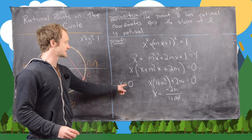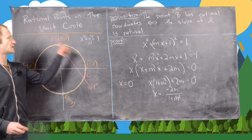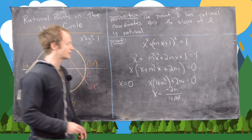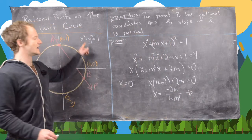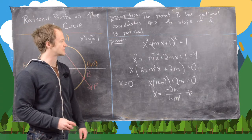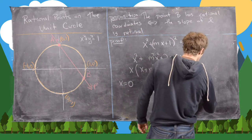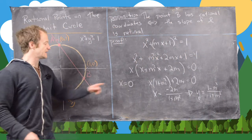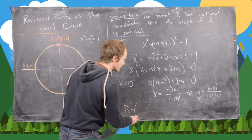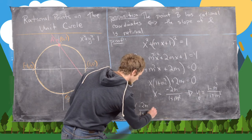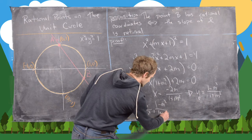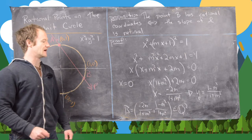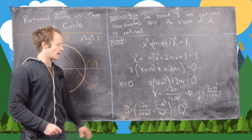The solution x = 0 corresponds to our starting north pole (y = 1), so we ignore that. For the other solution x = −2M / (1 + M²), substituting back gives y = (1 − M²) / (1 + M²). So the intersection point B is (−2M / (1 + M²), (1 − M²) / (1 + M²)), which is clearly a rational point given that M is rational.